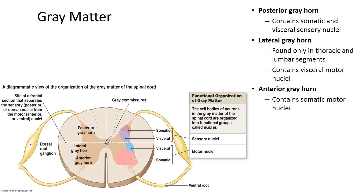The spinal cord also contains white matter, which includes large numbers of myelinated and unmyelinated axons and can be further subdivided into functional and structural areas. The structural components are divided into columns: the posterior white column lies between the posterior gray horns and posterior median sulcus; the lateral white column includes white matter on either side between the anterior and posterior columns; and the anterior white column lies between the anterior gray horns and the anterior median fissure.